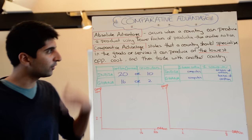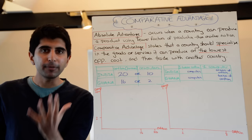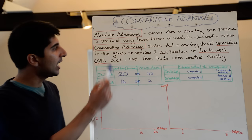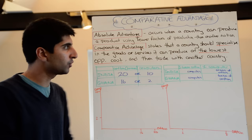Let's start by looking at the key difference between two fundamental concepts in trade theory: absolute advantage and comparative advantage, both of which are defined at the top. Absolute advantage is a very simple idea that occurs when a country can produce a product using fewer factors of production than another nation. Comparative advantage states that a country should specialise in producing goods or services at the lowest opportunity cost, only then should it trade with another nation. The key difference is in this notion of opportunity cost.